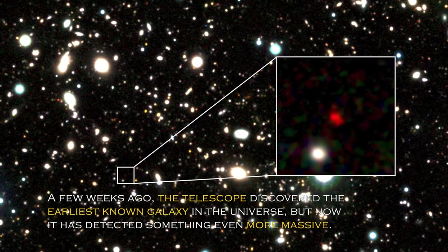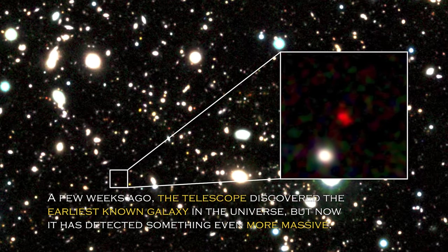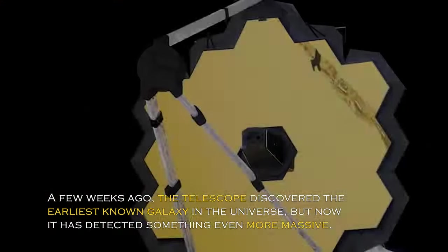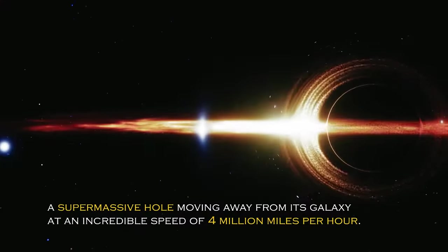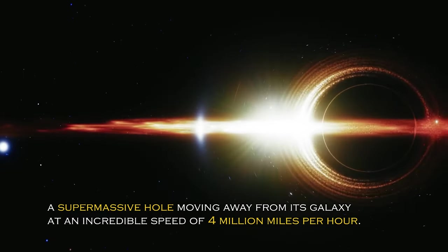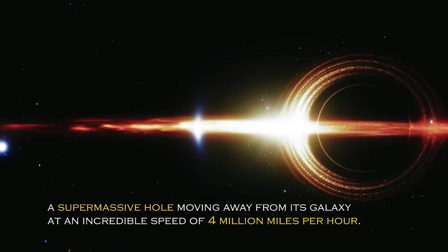A few weeks ago, the telescope discovered the earliest known galaxy in the universe, but now it has detected something even more massive – a supermassive black hole moving away from its galaxy at an incredible speed of 4 million miles per hour.